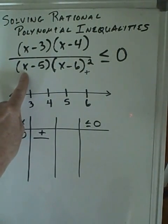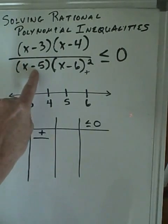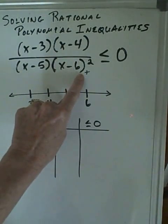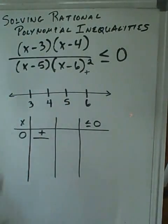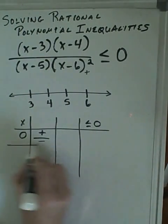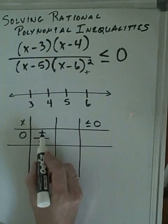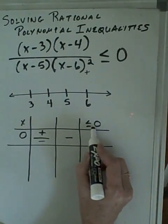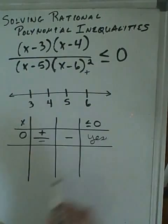Going back to putting our zero in the denominator, zero minus five is a negative and this is a positive. A negative times a positive is a negative. So our value for zero, positive divided by a negative, is a negative. And is that less than or equal to zero? Yes, it is.